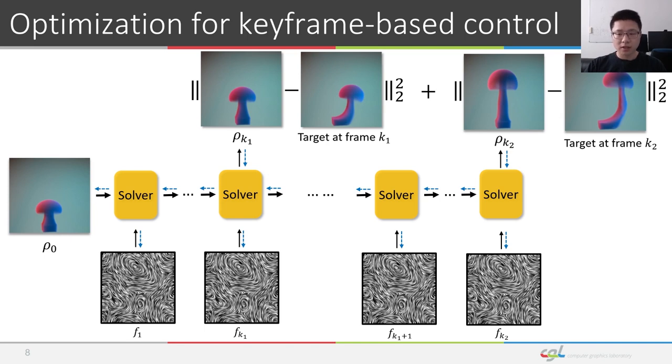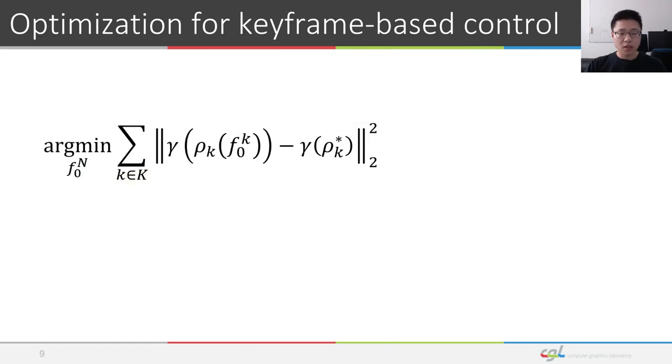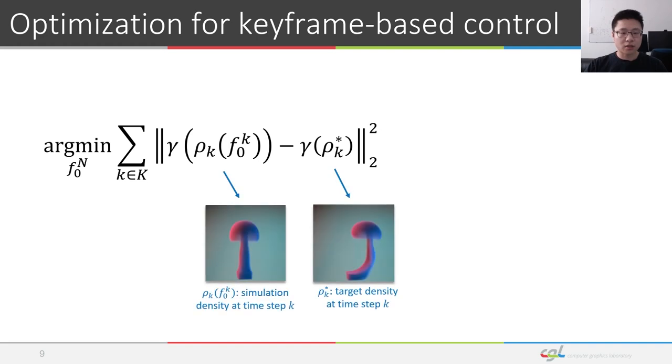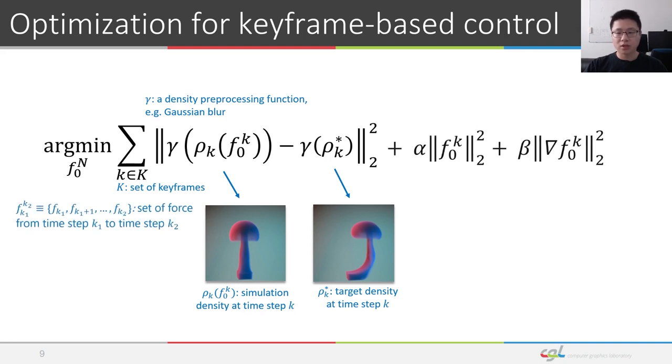Now let's take a closer look at the objective function. The objective function is usually composed of two parts. The first part computes the difference between simulation and target densities, where k is the set of keyframes. A density pre-processing function such as gaussian blur on the density field can be employed for improved convergence. The second part focuses on regularization of the computed force fields. The Tikhonov regularization penalizes the magnitude of the force fields, while the total variation regularization encourages smoothness of the force fields. Here alpha and beta are weights for regularization terms.